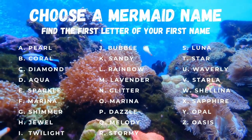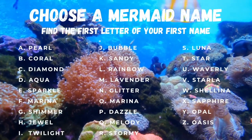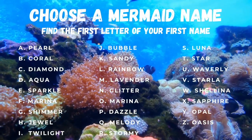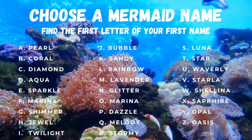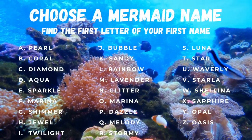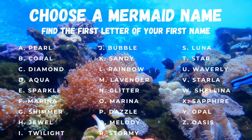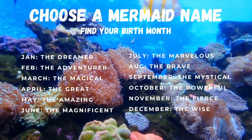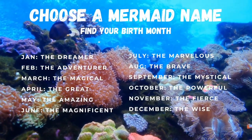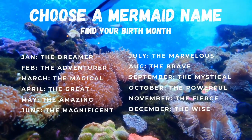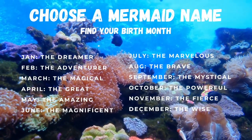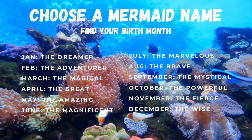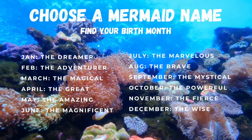First, you'll find the first letter of your first name. For example, my name is Kayla, so my first name starts with a K, so I would circle the name Sandy. Now find your birth month. My birthday month is March, so I would choose the Magical. Now you'll put your two names together. For example, my name is Sandy the Magical. What's your mermaid name?